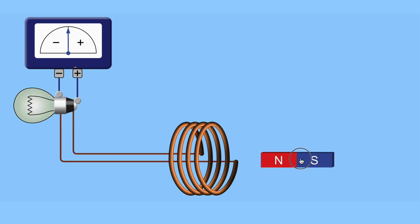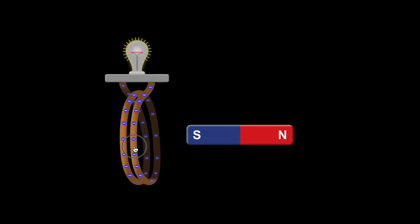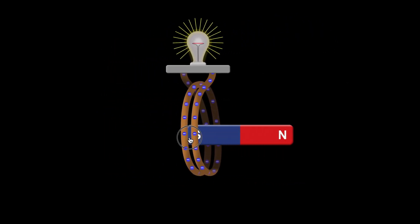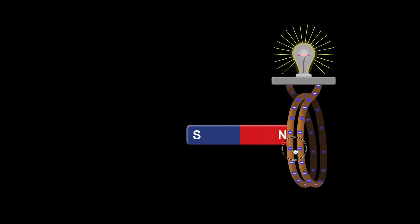He experimented further. He held the magnet still once more, and still he observed no current. This time, he moved the coil instead of the magnet, and to his surprise, the needle moved again.